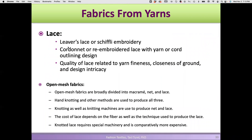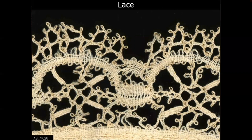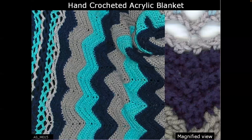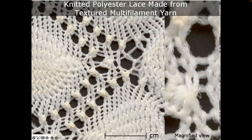There are different kinds of lace — you can also create lace with Schiffli embroidery machines, and there's levers lace. Other open mesh fabrics include macramé and nets, created by hand knotting or knitting machines. This is a tricot knit netting made on a warp knit machine using loops. This is lace, this is crochet — a hand-crocheted acrylic blanket. This is lace made on a Raschel warp knit machine, and these use weft knitting methods.